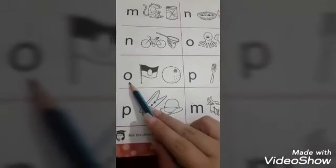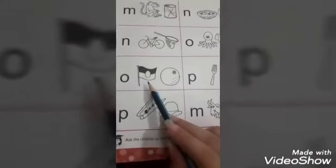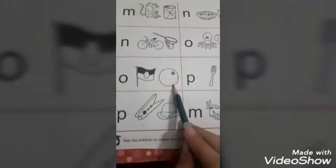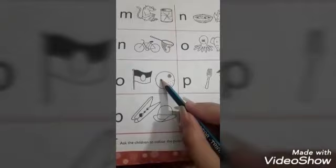Next one. O. Which sound is this? O. And two pictures: flag, orange. So the correct picture is orange.